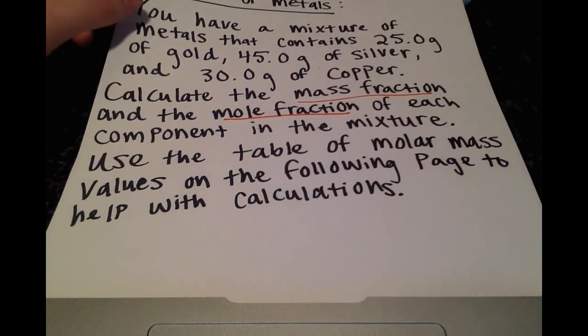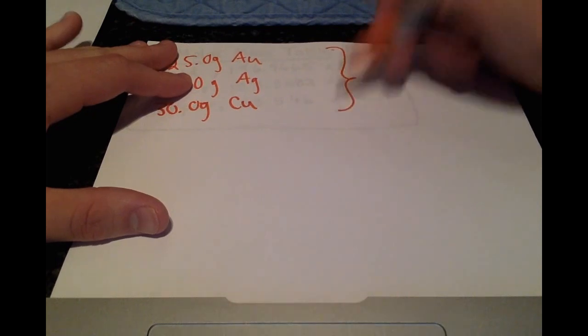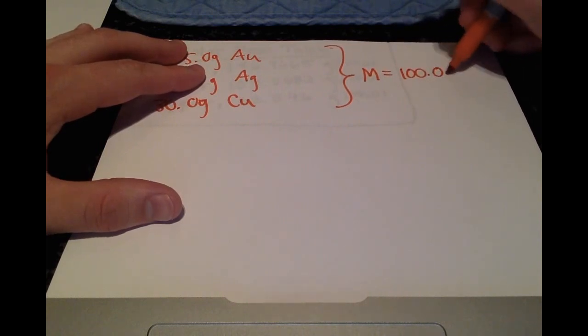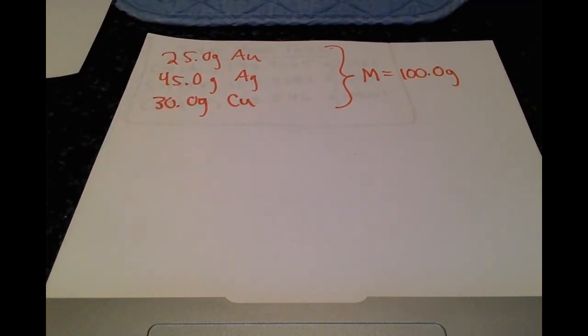So first things first, let's do the mass fraction because that's what we were given. So rewriting everything with chemical symbols from the periodic table, we have 25 grams of gold, 45 grams of silver, and 30 grams of copper. So the first step is to get the total mass. That's just summing these together, and we get 100 grams.